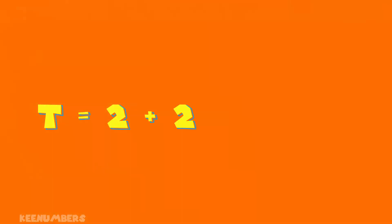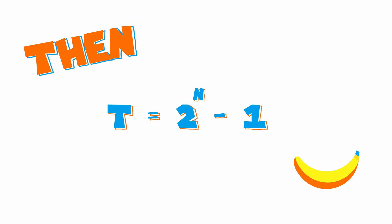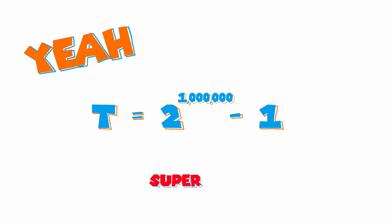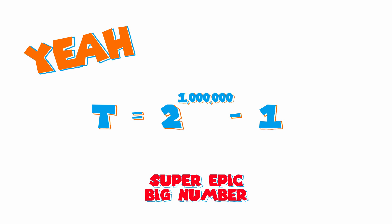Do you remember the original question at the beginning of the video? What if we have 1 million lights on? That's a lot of lights — and that's way too many lights for us to sit here and count them all one by one. Good news, there's a formula. If t is equal to 2 to the 0 power plus 2 to the 1 power plus ... plus 2 to the n minus 1 power, then t is equal to 2 to the n power minus 1. So if we have 1 million lights on, that is 2 to the 1 million power minus 1 in base 10.